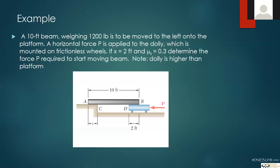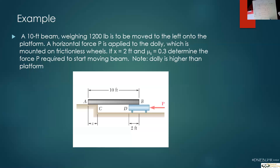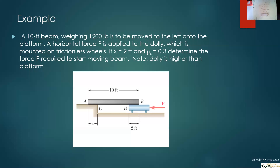What would happen if P was over 225 — would the dolly move under it? No, because as soon as you exceed 135 pounds, the whole thing just moves. Think of it as two contact points: contact at A and contact at D. A fails at 135 pounds — once you've reached that, the whole thing moves. The dolly doesn't slide out because the weaker point — at A with 135 pounds — is what governs.